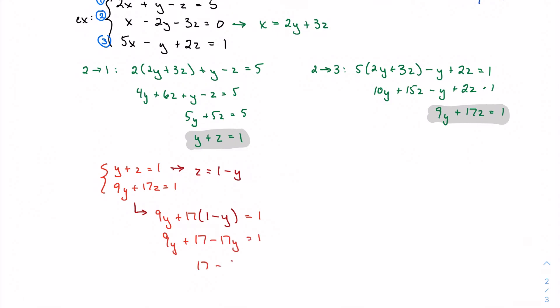So I'm going to have 9y plus 17 minus 17y equals one. So I have 17 minus 8y, negative 8y equals negative 16. And so y equals two.